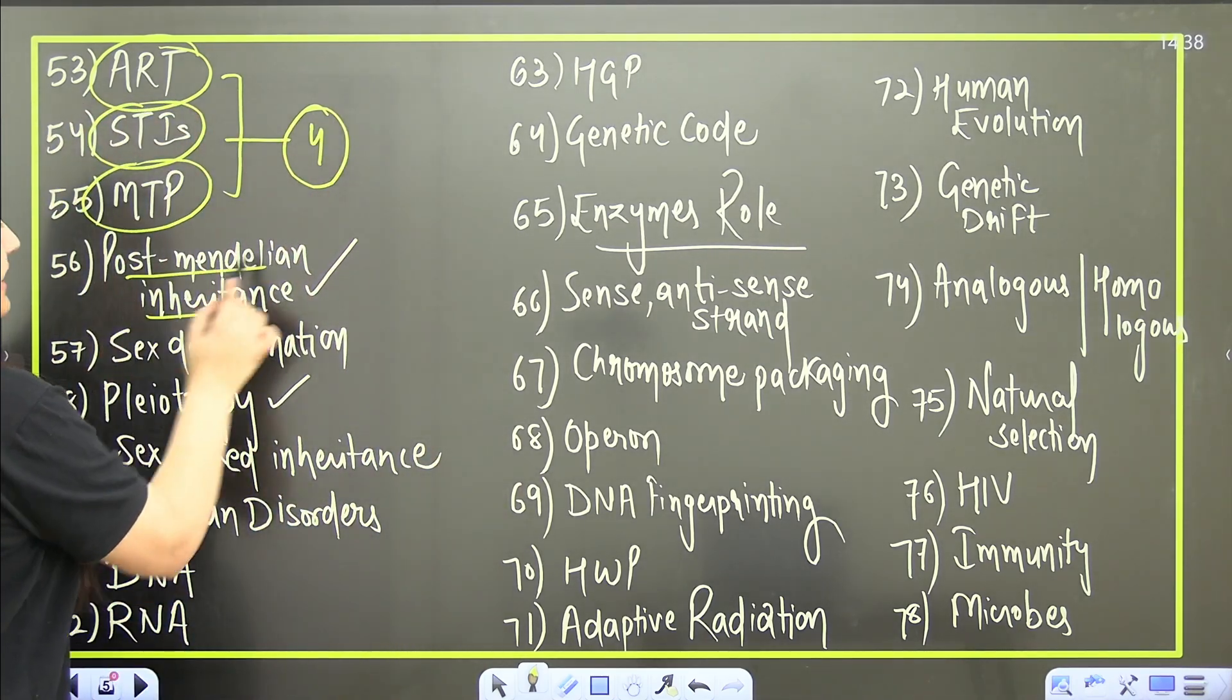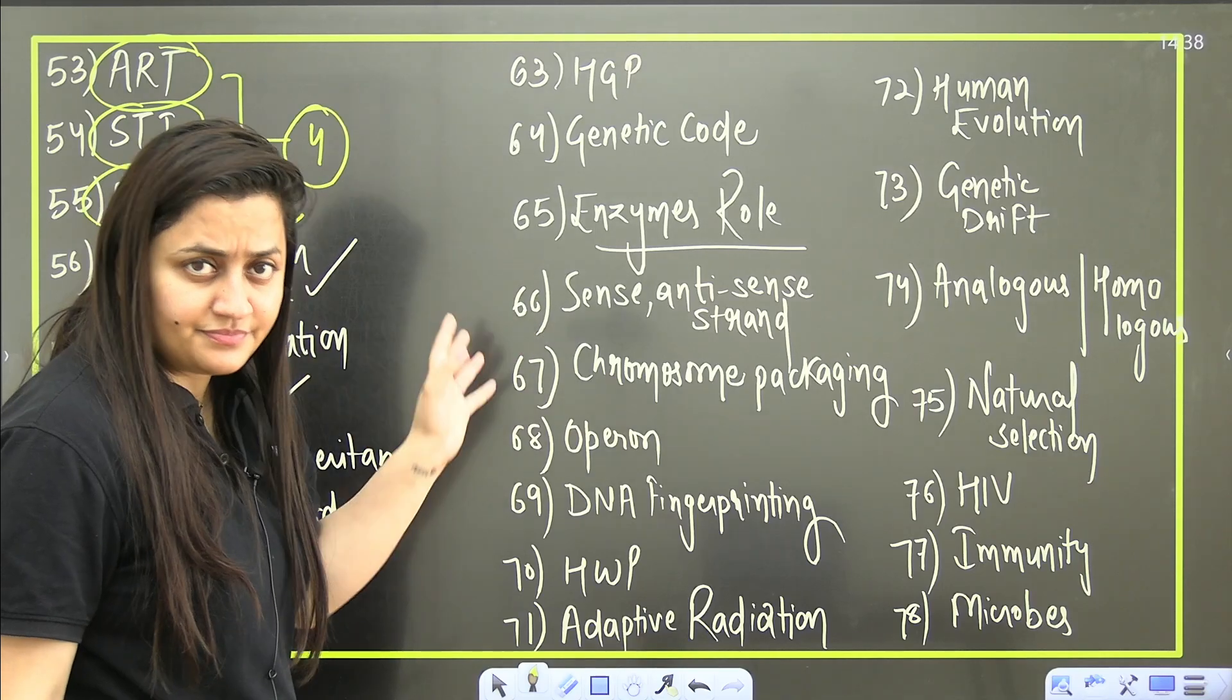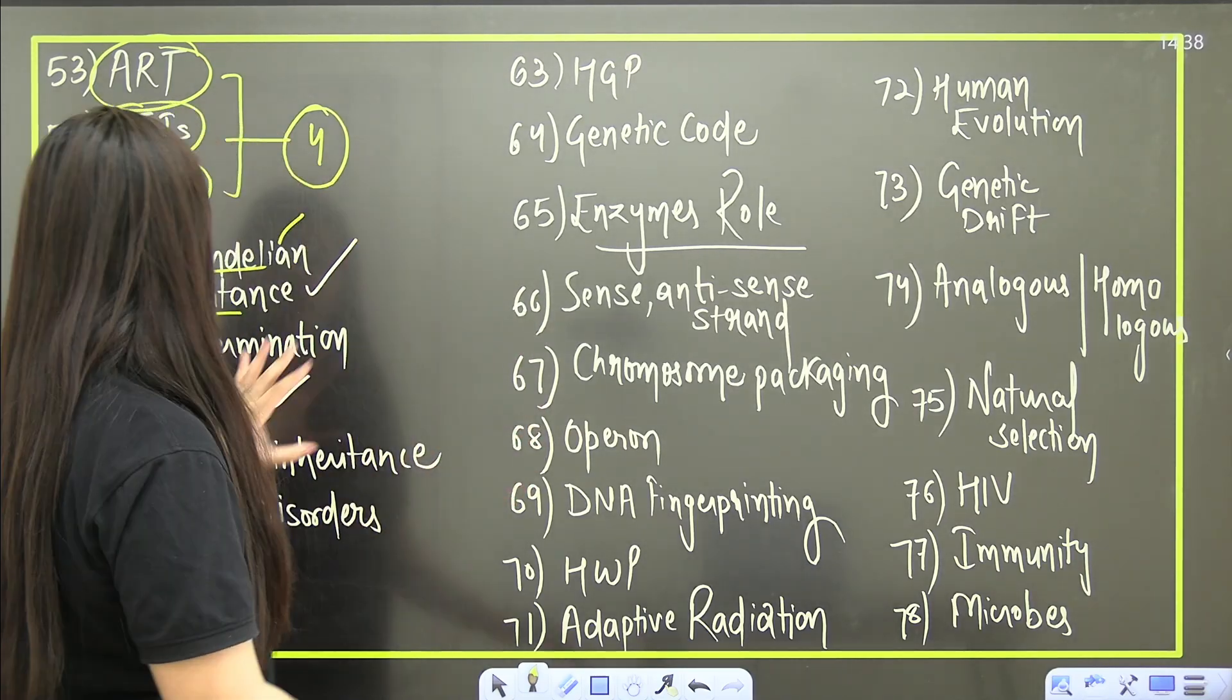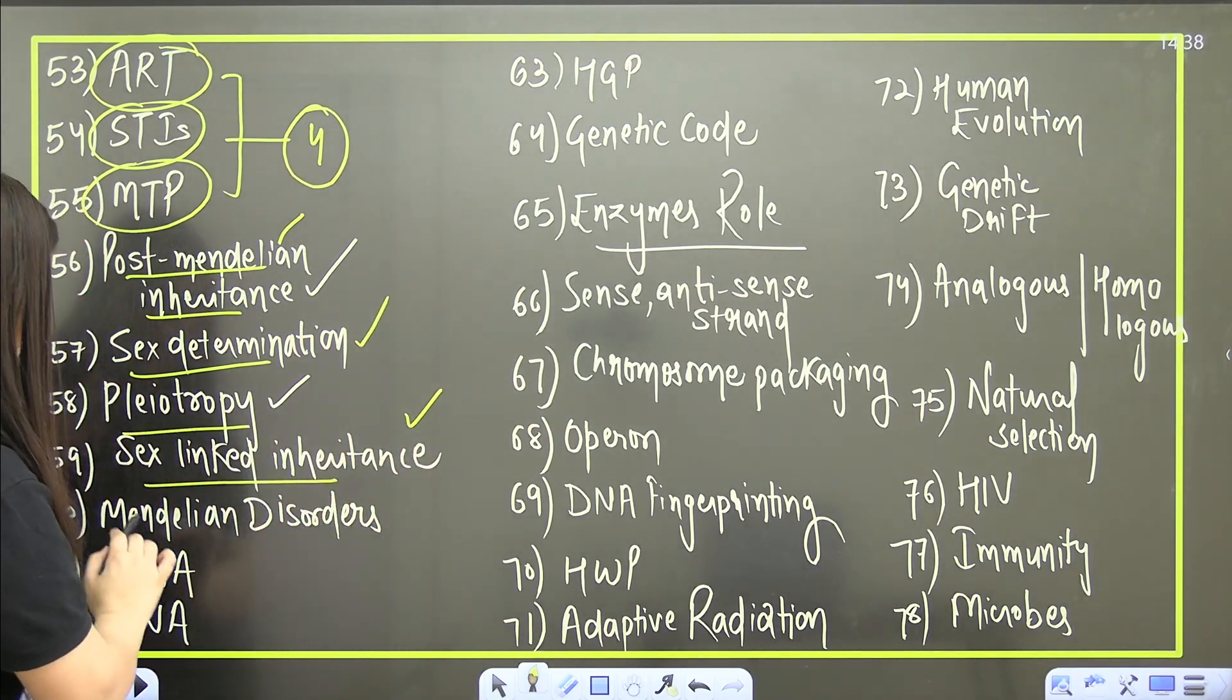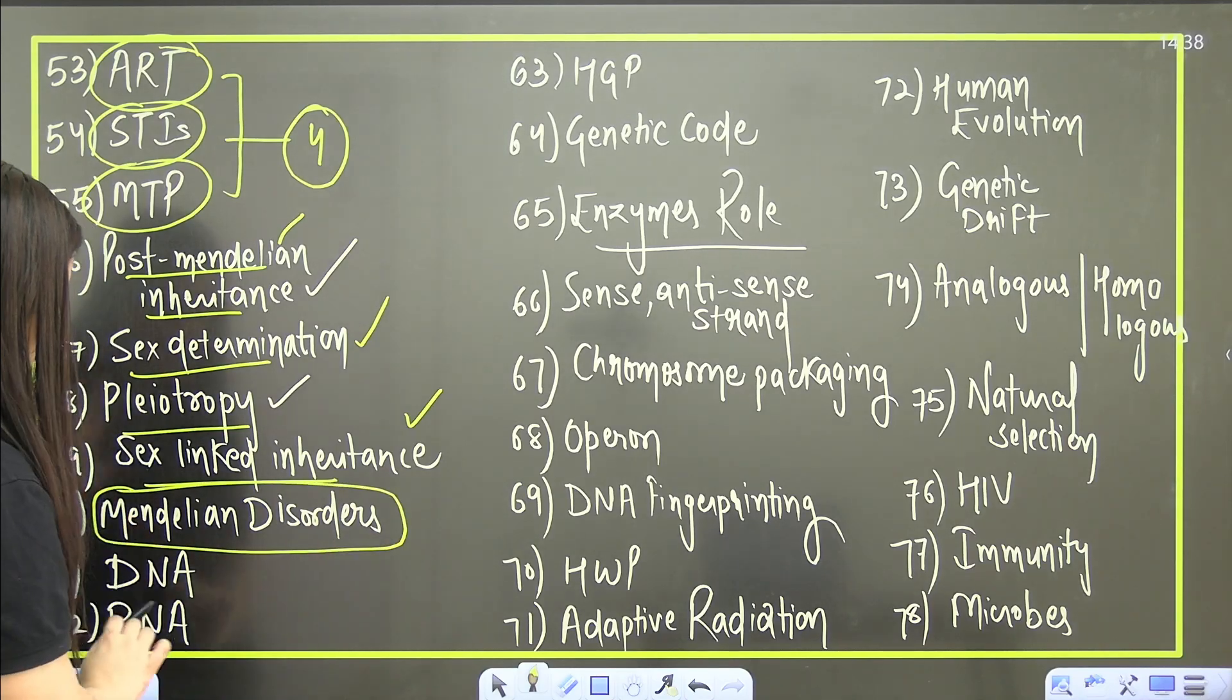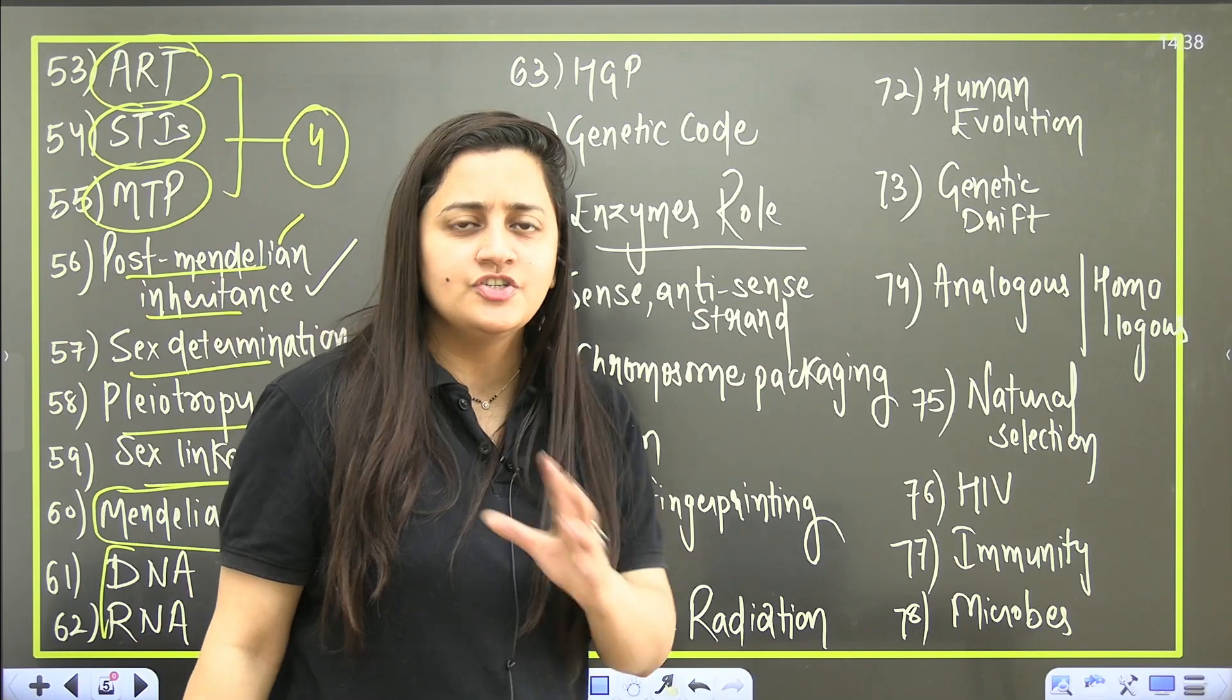Post-Mendelian inheritance - co-dominance, incomplete dominance, your multiple allelism and all. Then sex determination and sex-linked inheritance - very very important. Your pleiotropy, Mendelian disorders - very important.